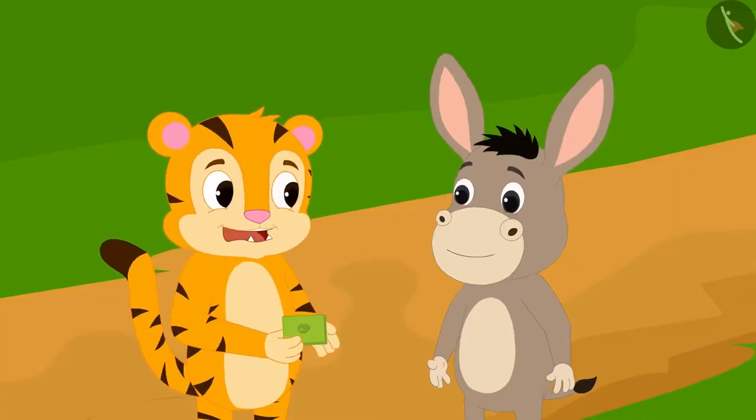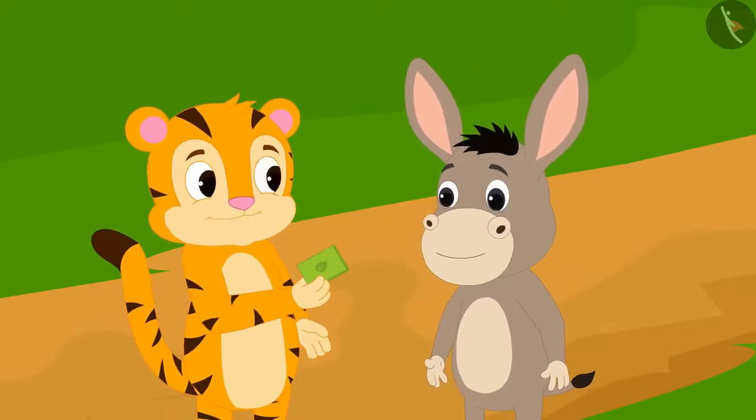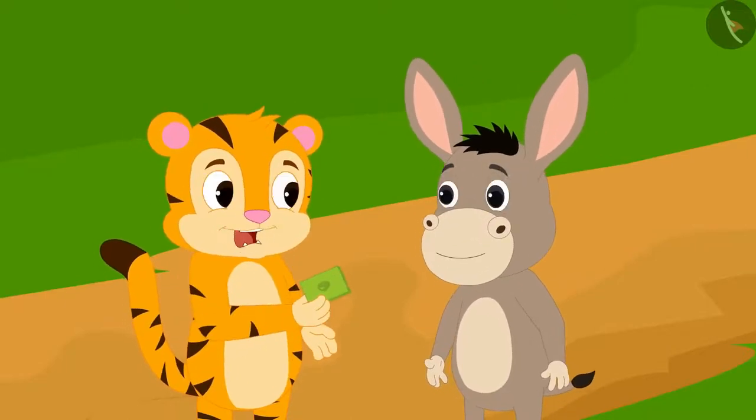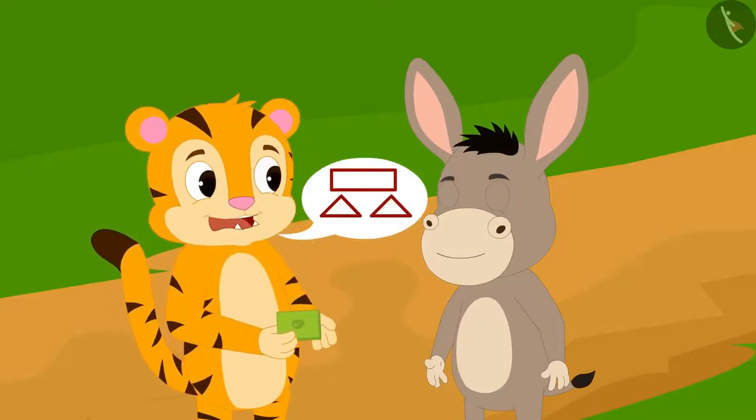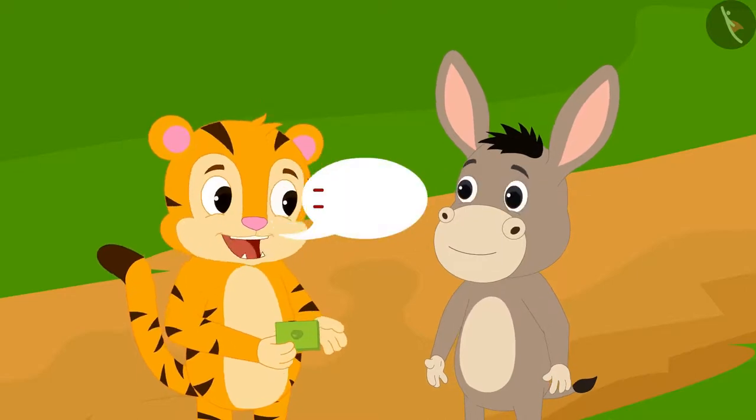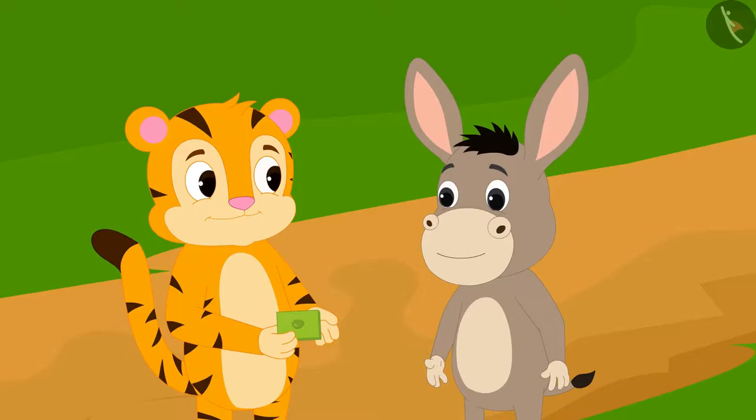Never mind, Bholla, you won't be able to answer my second riddle. Can you divide this pistachio barfi into a rectangle and two equal area triangles by drawing two lines? Sher Khan asked Bholla.